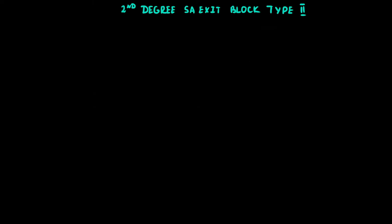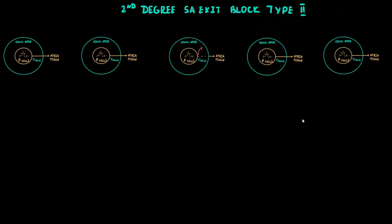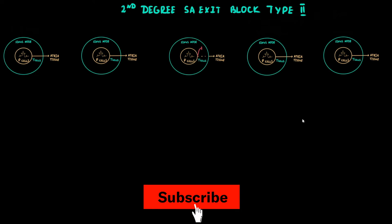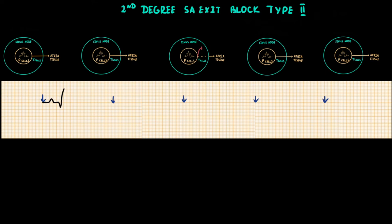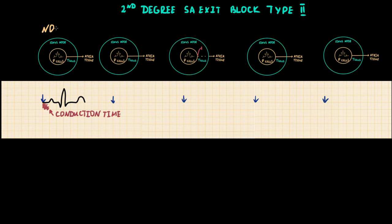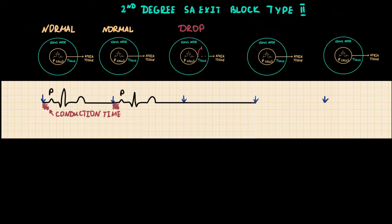Unlike second degree block type 1, in type 2 there is no progressive lengthening of sinoatrial conduction time. In type 2 SA block, there is a rapid drop of PQRST complexes without any problem with sinoatrial conduction before or after the drop. In the first two complexes we have normal conduction time from the sinus node to atria, and after this we have a dropped PQRST due to block of impulses in T-cells. During the pause, conduction between the sinus node and atrial tissue is restored and the next sinus impulse is normally conducted.